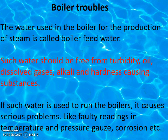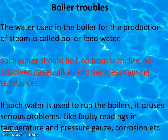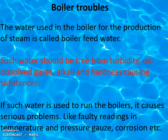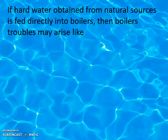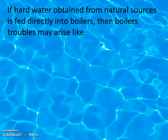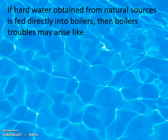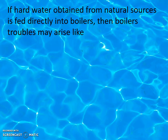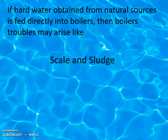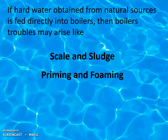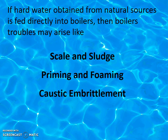If such impure water is used to run boilers, it causes serious problems like faulty readings in temperature and pressure gauges, and is also responsible for corrosion. If hard water obtained from natural resources is fed directly into boilers, different types of serious troubles may arise, such as scale and sludge formation, priming and foaming, and the important one — caustic embrittlement. We will see these one by one in detail.